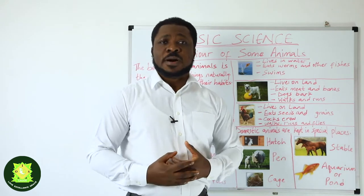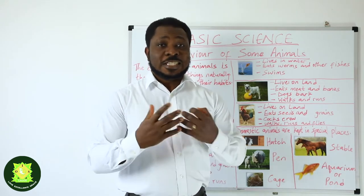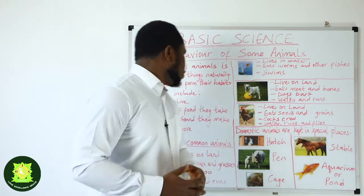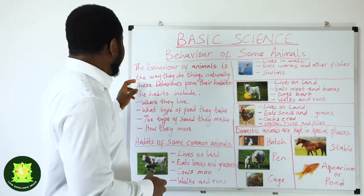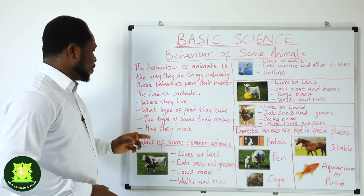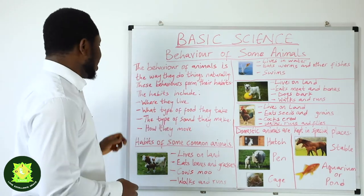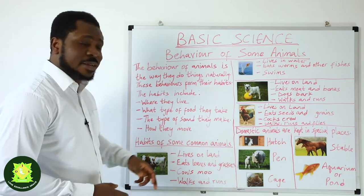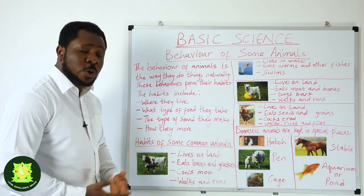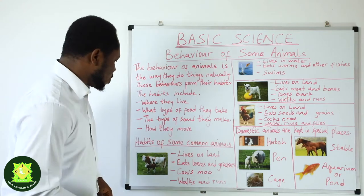The behavior of animals is how they do things naturally. These behaviors form their habits. The habits include where they live, what type of food they take, the type of sound they make, and how they move. So we are going to be looking at the habits of some common animals.